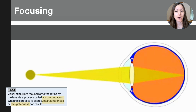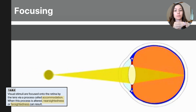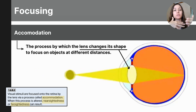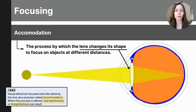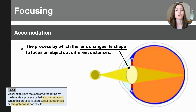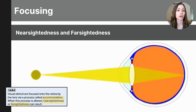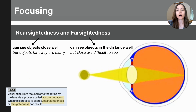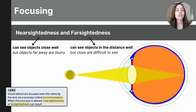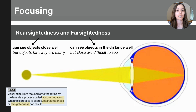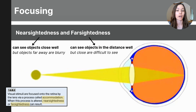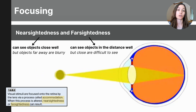Now that you've learned about the structures of the eye, you know that the lens plays an essential part in our eye's ability to focus on objects near and far through a process called accommodation — the process by which the lens changes its shape to focus on objects at different distances. Some people have difficulty seeing objects far away or close up. We often refer to these conditions as being nearsighted or farsighted, or myopia or hyperopia. Nearsighted individuals can see objects close to them well, but objects farther away become blurry. Farsighted individuals can see objects in the distance well, but when objects get closer it becomes more difficult to see. These conditions are not necessarily caused by the lens in the eye, but can be corrected by lenses outside of the eye. In nearsightedness, the shape of the eye causes the light to focus too early before hitting the retina. In farsightedness, the shape of the eye causes the light to focus behind the retina.